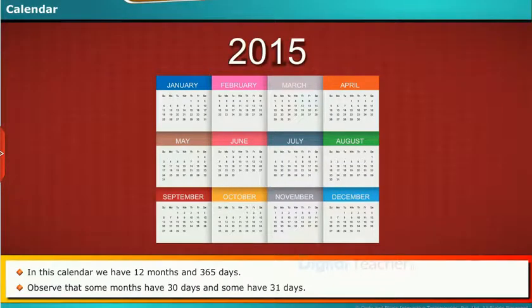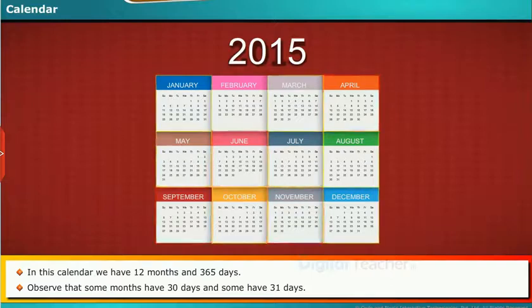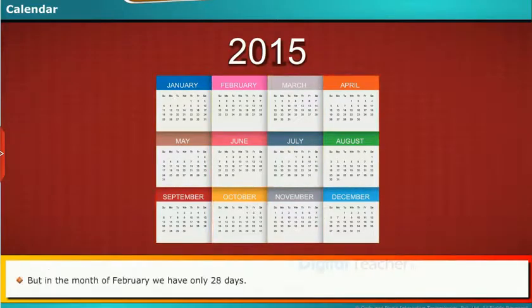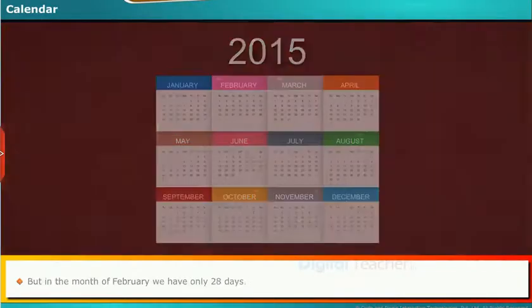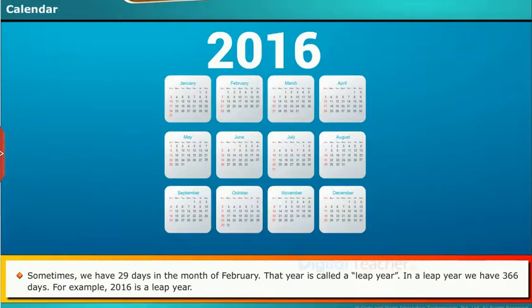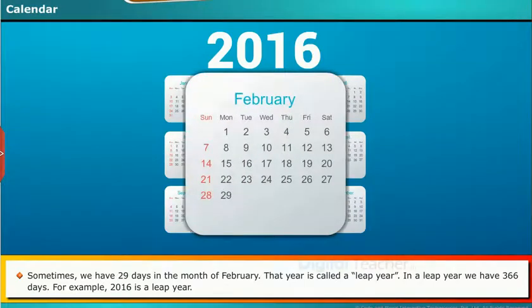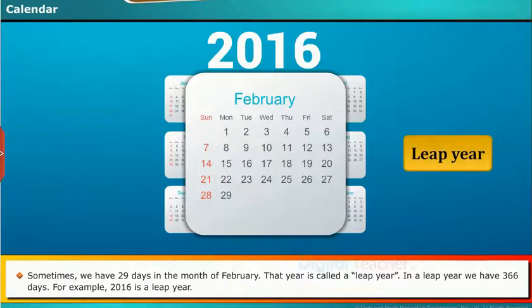Observe that some months have 30 days and some have 31 days. But in the month of February, we have only 28 days. Sometimes we have 29 days in the month of February — that year is called a leap year. In a leap year, we have 366 days.